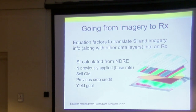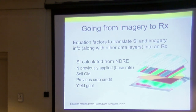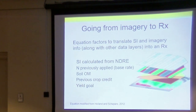Once we have our indices and stitched images, we overlay them in GIS software — we use QGIS, which is free and similar to ArcMap. We combine the calculated sufficiency index with the base rate of nitrogen, organic matter credits, previous crop credits (like a soybean nitrogen credit), and a yield goal. All of those factors go into the equation that generates the prescription.